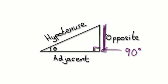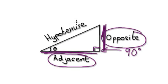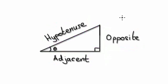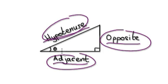This length here is called the hypotenuse — the longest side is called the hypotenuse. And this side here is called the adjacent. These are just names to help us communicate with each other. So: opposite, hypotenuse, and adjacent.